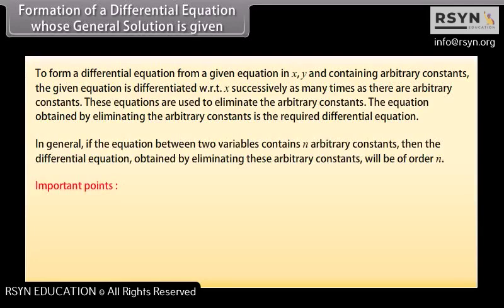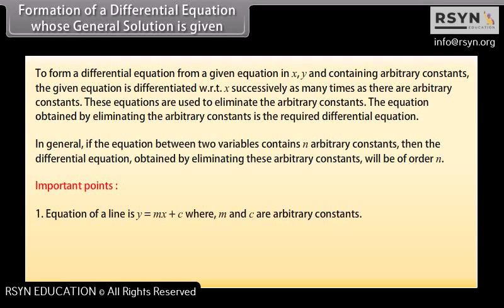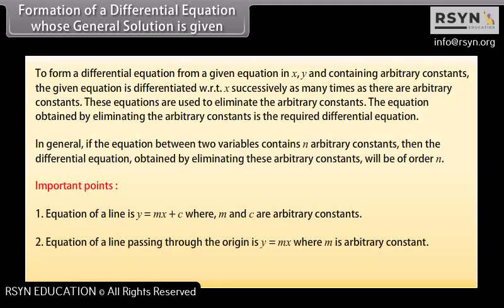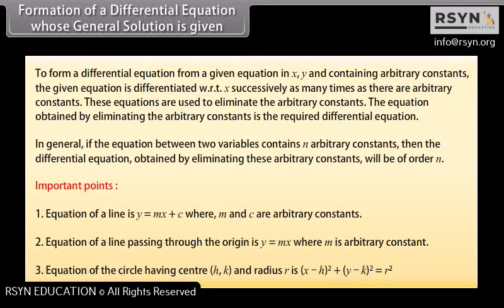Important points: the equation of a line is y = mx + c, where m and c are arbitrary constants. The equation of a line passing through the origin is y = mx, where m is an arbitrary constant. The equation of a circle with center (h, k) and radius r is (x−h)² + (y−k)² = r².